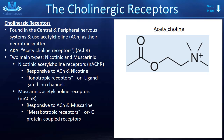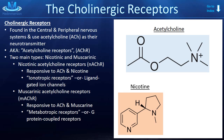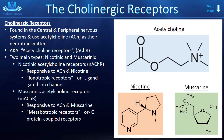The cholinergic receptors — this is a high-yield topic. You really need to understand this when you're going into your boards or exams. These receptors are found in the central and peripheral nervous systems, and they use acetylcholine as their neurotransmitter. Thus, they can also be referred to as acetylcholine receptors, abbreviated ACH-R. There are two main types: the nicotinic acetylcholine receptors and the muscarinic acetylcholine receptors.